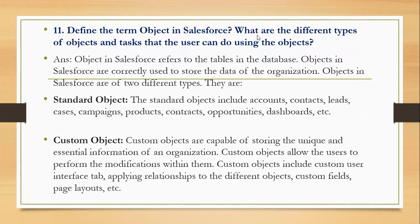Define the term object in Salesforce. What are the different types of objects? Objects in Salesforce refer to tables in the database and are used to store data of the organization. There are different types: standard objects include account, contact, leads, case, campaign, product, contract, opportunity, dashboards, and custom reports. Custom objects are capable of storing unique and external information of the organization. Custom objects allow users to perform modifications and include custom user interface, tabs, relationships to different objects, custom buttons, and page layouts.